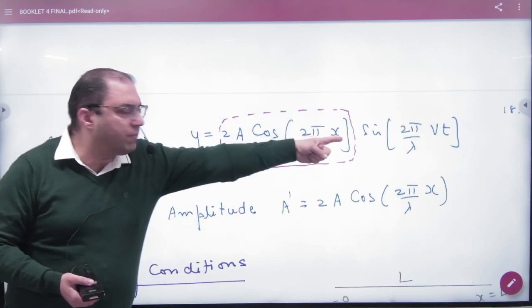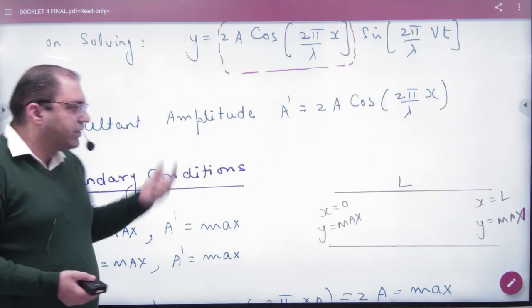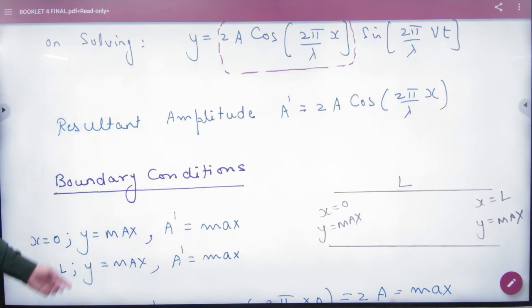The resultant wave, to keep the time term, remember to keep the time term, so this is the amplitude. This amplitude is the boundary condition. The boundary condition is in every situation there will be two.